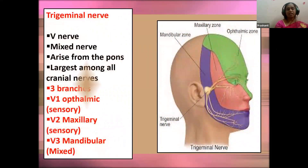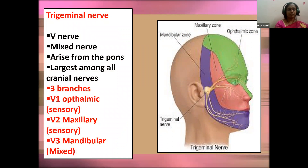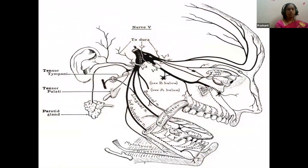The fifth cranial nerve is the trigeminal nerve — a mixed nerve and the largest and most complex of all cranial nerves. It has three branches: ophthalmic, maxillary, and mandibular — concerned with the eye, upper jaw, and lower jaw respectively. It is responsible for sensation in the face and motor functions such as biting and chewing. Any sensation when you touch your face is due to the trigeminal nerve.